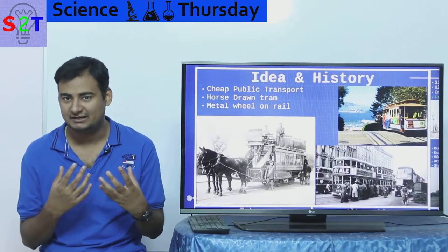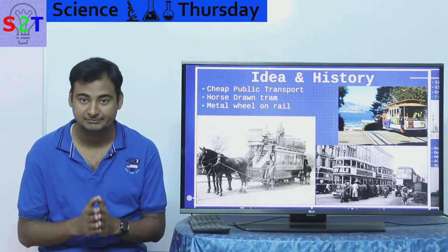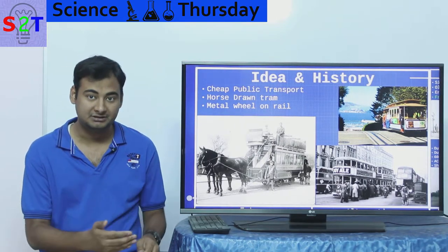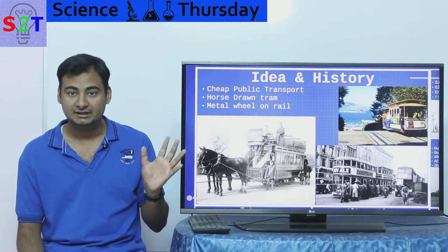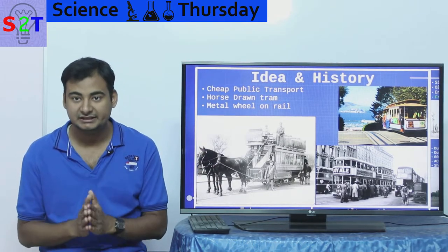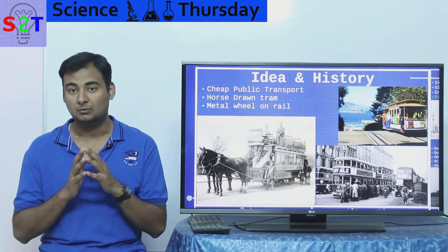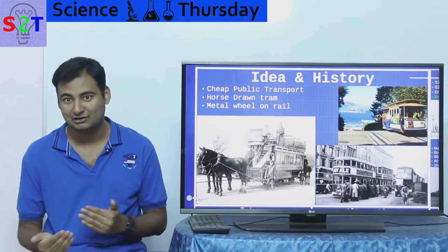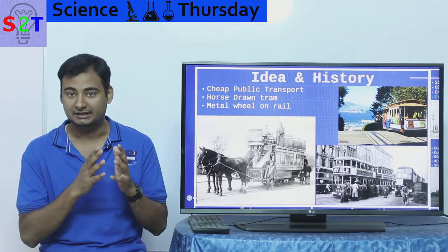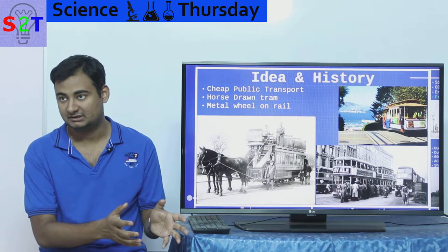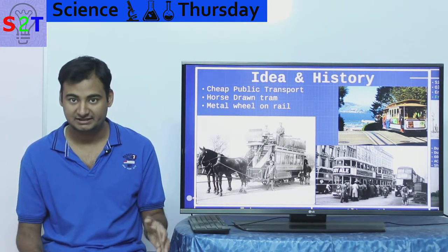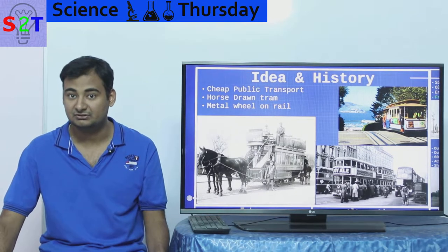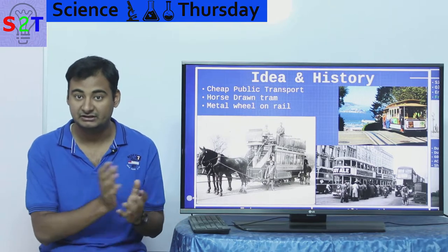Before we understand the trolley bus itself we have to understand the idea and the history behind public transport, and why we have a need for cheap public transport. This whole idea is very ancient — I'm talking 1800s, the early industrial revolution period. What happened during that time is when the economy started to move, people were living as close as possible to their working place, as in the factory — they had their home right there. As production started to go up, they ended up with a scenario which we call shift transfer, basically three to four shifts.